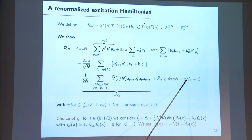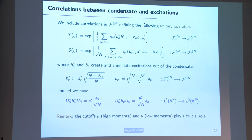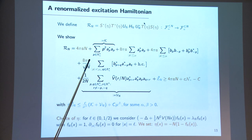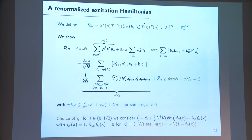We manage to write the renormalized excitation Hamiltonian as a main part where only the scattering length appears, plus the positive interaction, plus error terms that are small and bounded in terms of the other quantities. This allows us to prove that the excitation Hamiltonian is bounded below by the ground state energy at leading order plus the number of excitations, yielding the uniform bound on the number of excitations stated in the theorem. Regarding the cubic term renormalization: for small potential one can avoid it, but for large potential one needs to renormalize the cubic term too, otherwise the cubic term cannot be absorbed.